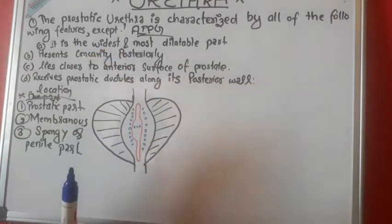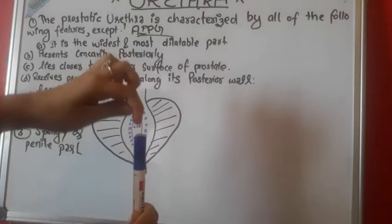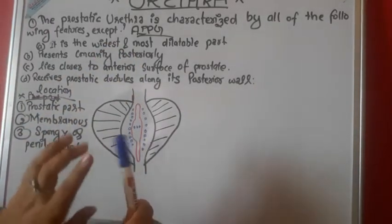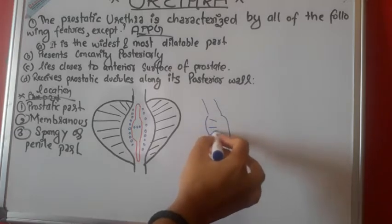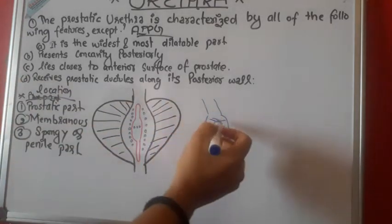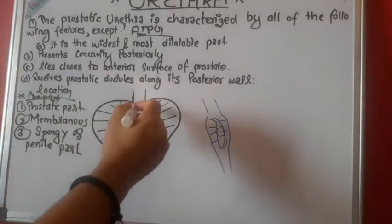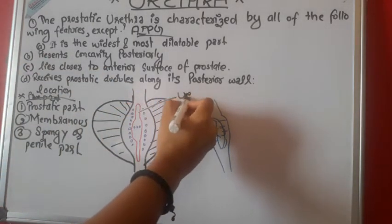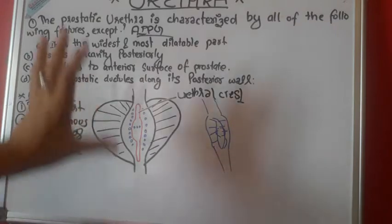In the posterior part of the urethra as it passes through the prostate, it bulges out, and in the middle it bulges due to the mucosal fold. This mucosal fold also bulges a little at its center, and this mucosal fold is known as the urethral crest.